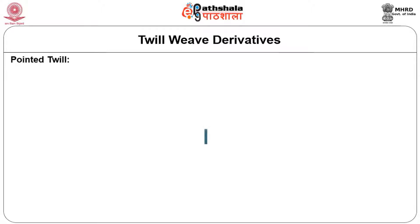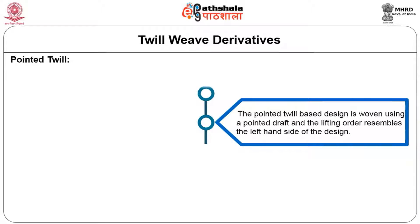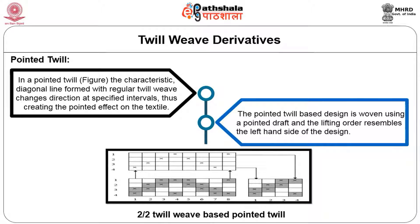In a pointed twill, the characteristic diagonal line reverses direction at specified intervals, creating a pointed effect on the textile. The pointed twill base design is obtained using a pointed draft, and the lifting order resembles the left-hand side of the design. The design works on a four-end base using a two up two down twill, and the design repeats on seven ends — the design is pointed from the fourth end onwards.